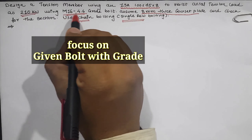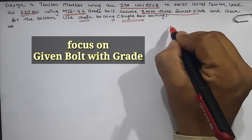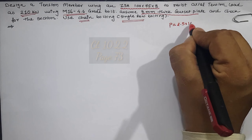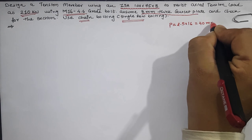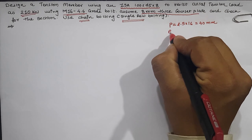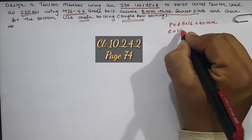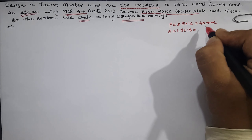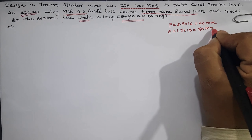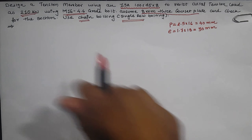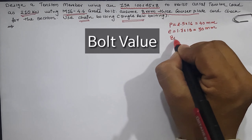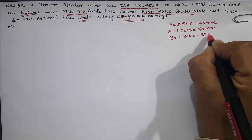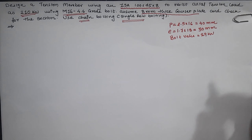For M16 4.6 grade bolt, the pitch value is 2.5 × 16 = 40 mm, and the edge distance is 1.7 times the diameter of the hole, which is 1.7 × 18 mm for a 16 mm bolt, giving a value of approximately 30 mm. For M16 4.6 grade bolt, the bolt value is 29 kN for a single shear connection.